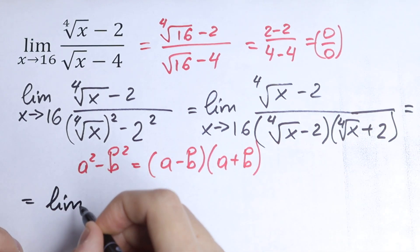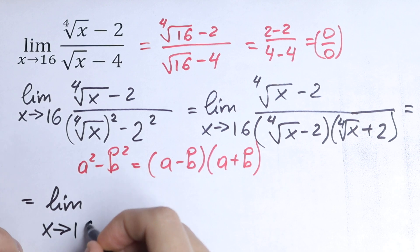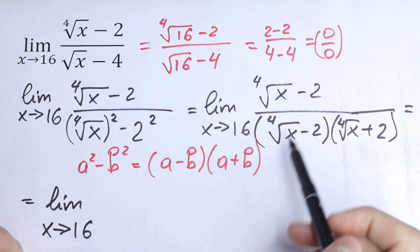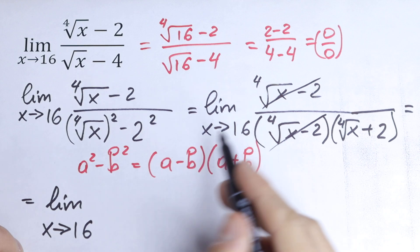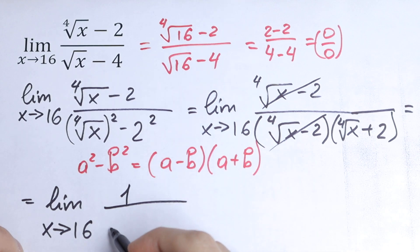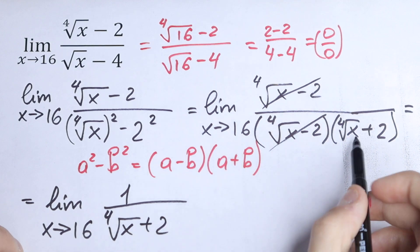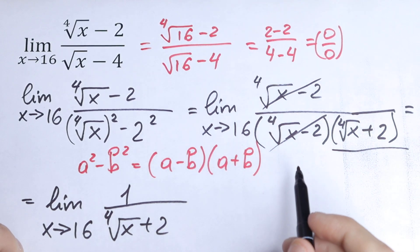We can cancel these terms, so as a result we will have 1 over fourth root of x plus 2. So we have only these parentheses, and let's plug in 16.